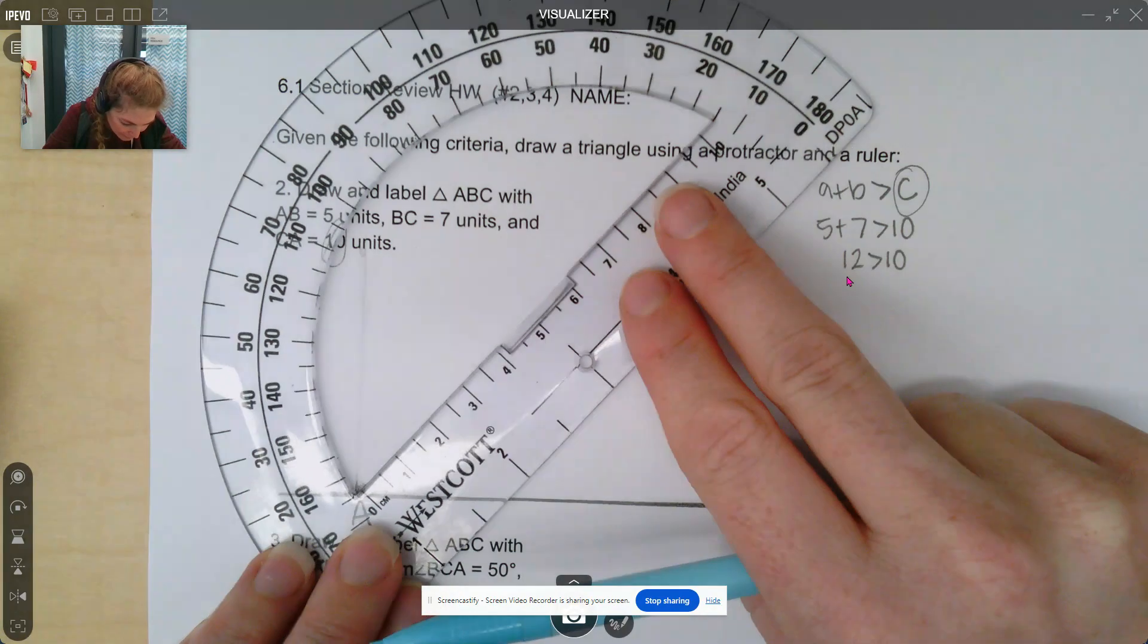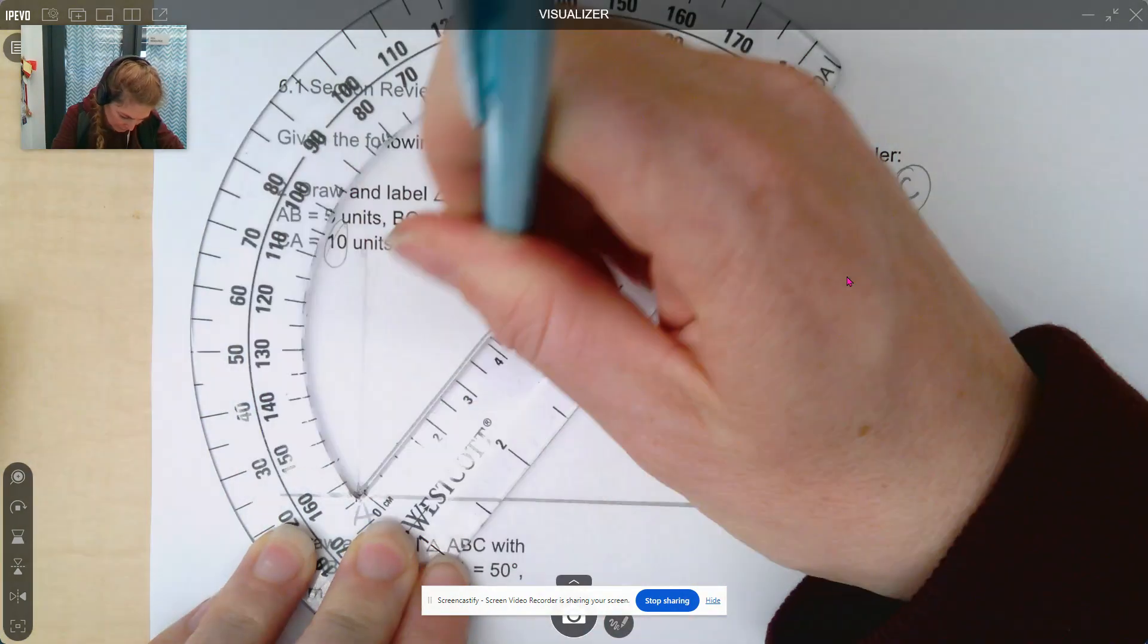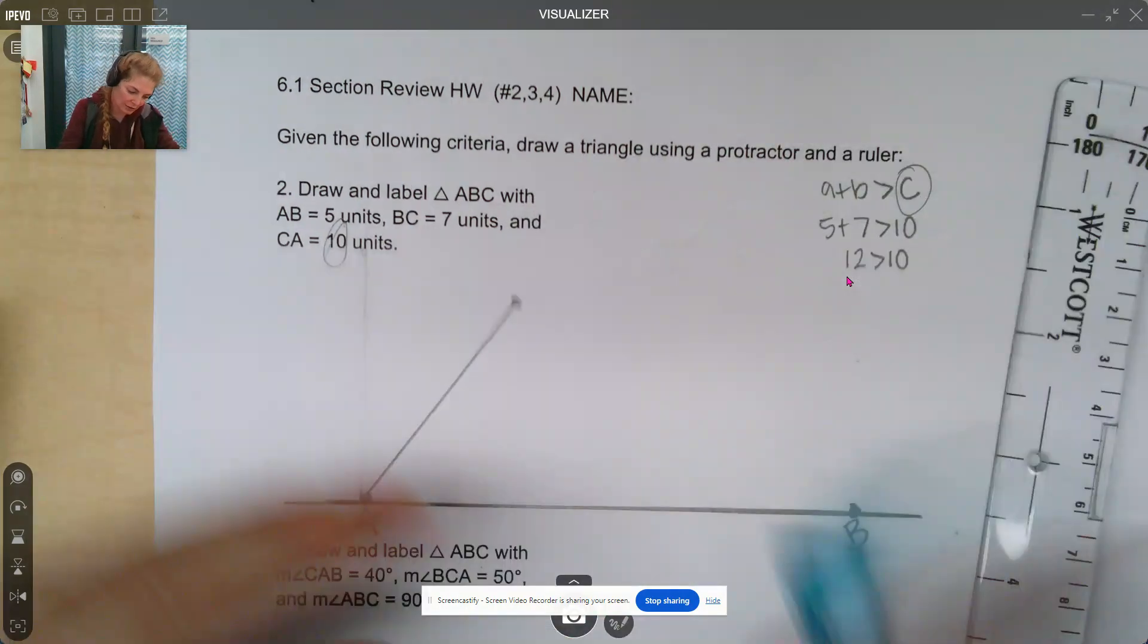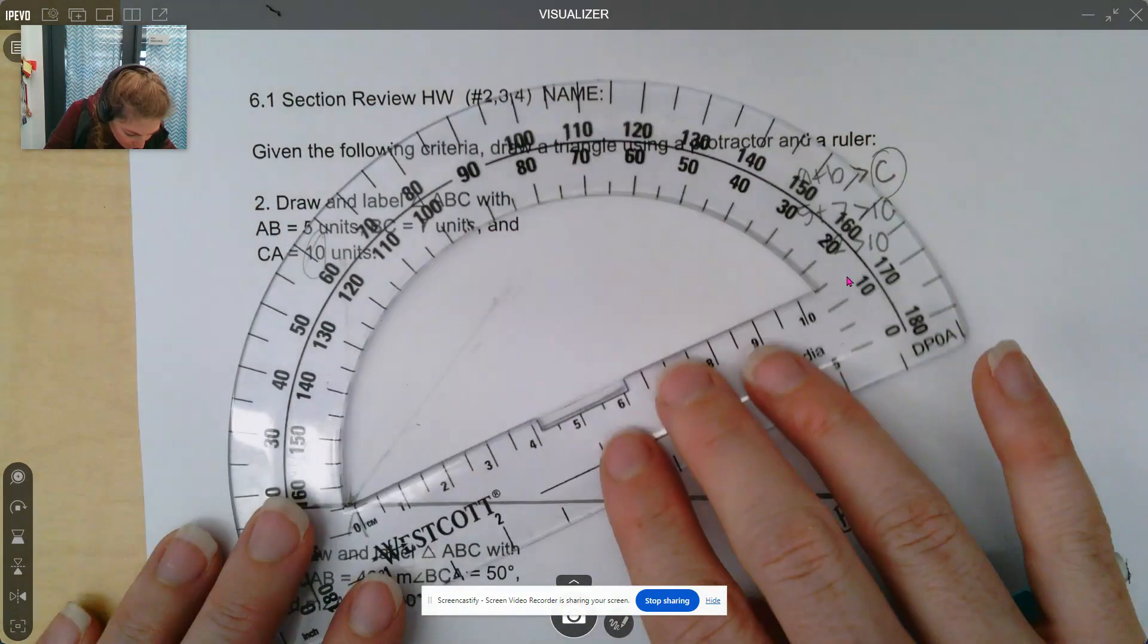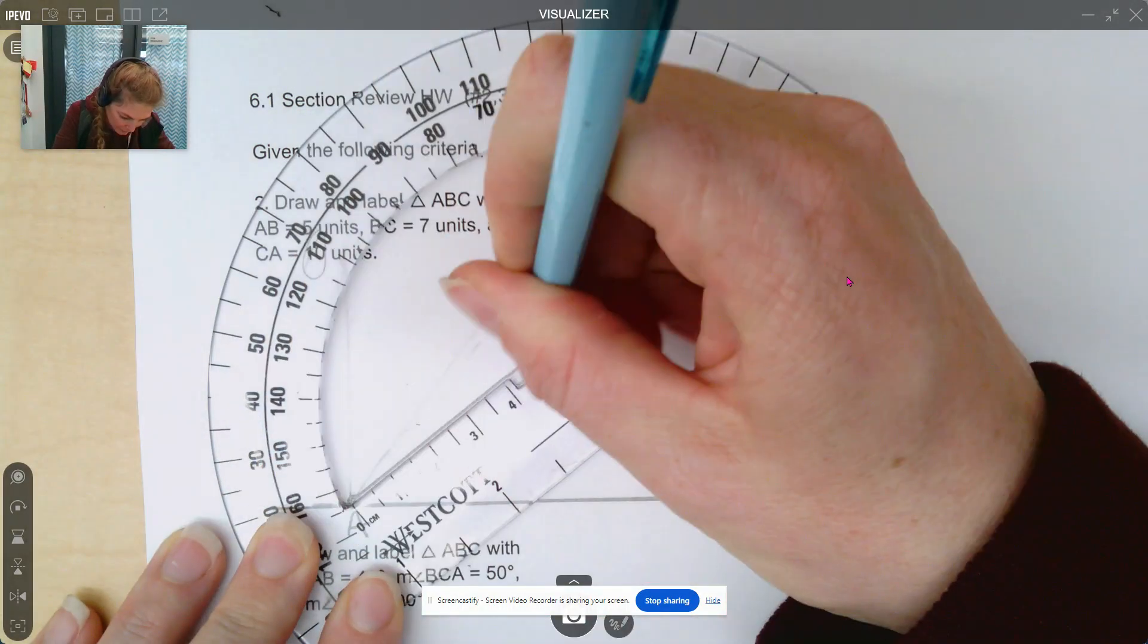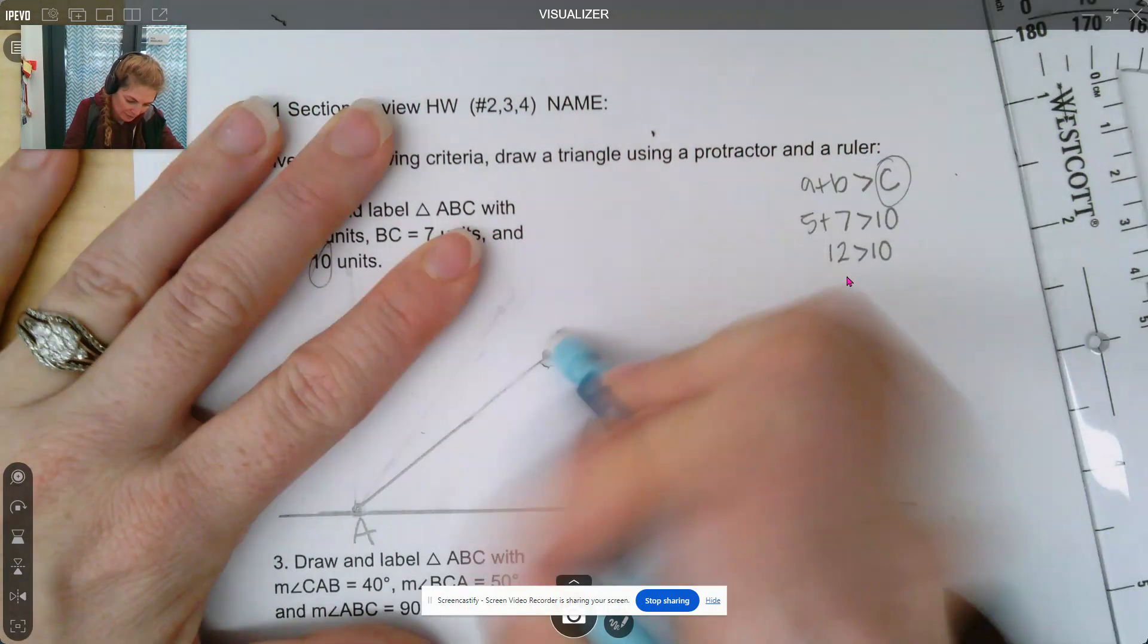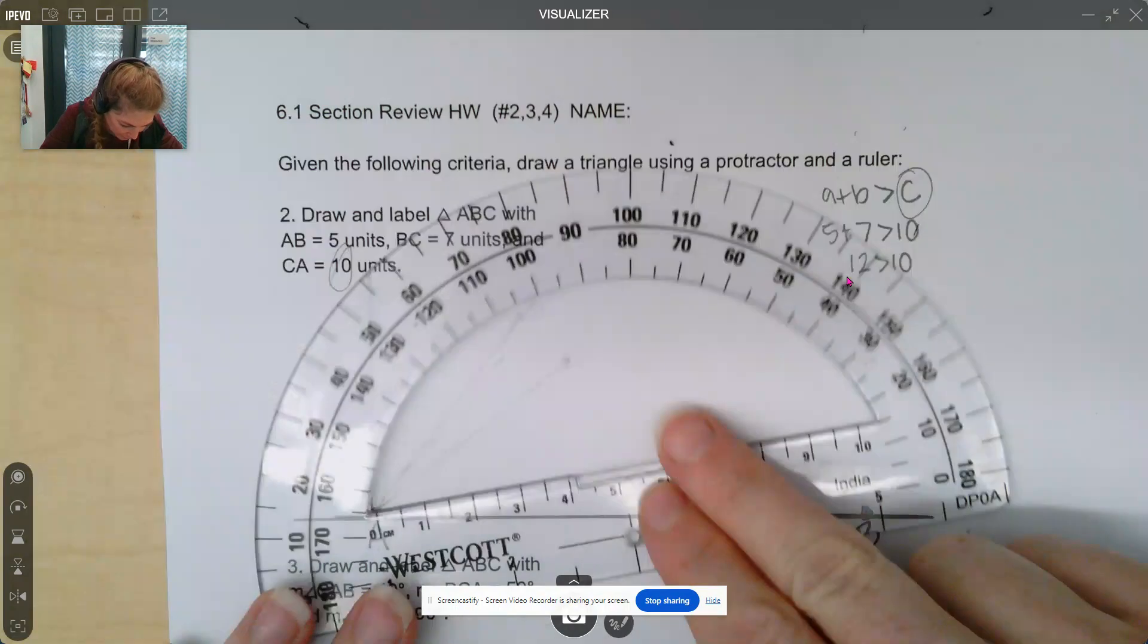So let's make our 5, let me make it like from here to here. So if that's 5, let's see where our 7, can our 7 reach it? Our 7 still can't reach it, so I know I need to have an even smaller angle. So let's see if I went from here to here for 5. Let's see if our 7 will reach it. Almost, almost, almost. Okay, so we're going to have an even smaller angle, and this is just how it goes when you're drawing this type of triangle.